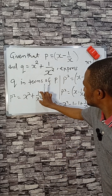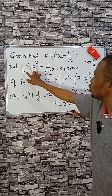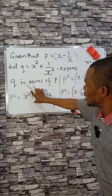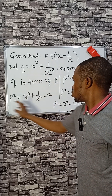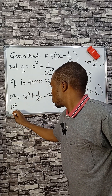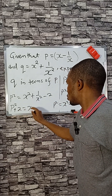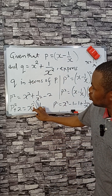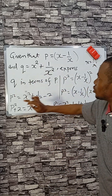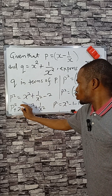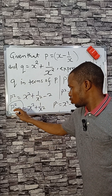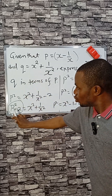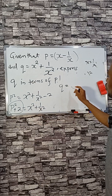Now we need to express q in terms of p. We have x squared plus one over x squared, and that equals q. If we take minus two to the other side, that gives p squared plus two equals x squared plus one over x squared. Since x squared plus one over x squared equals q, the answer is q equals p squared plus two.